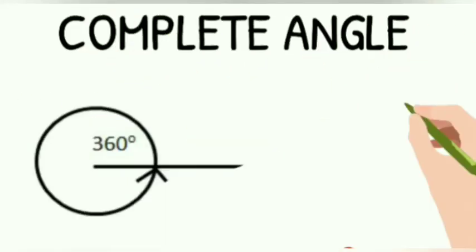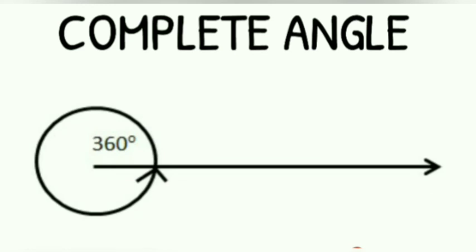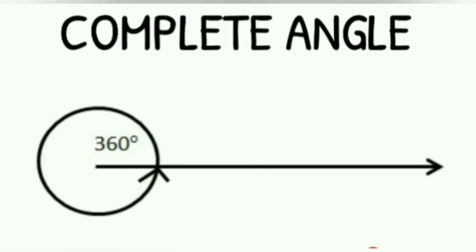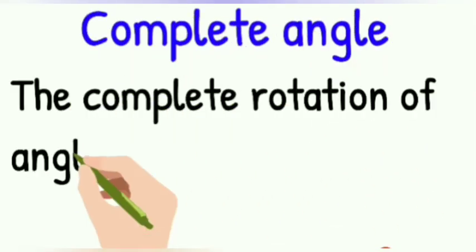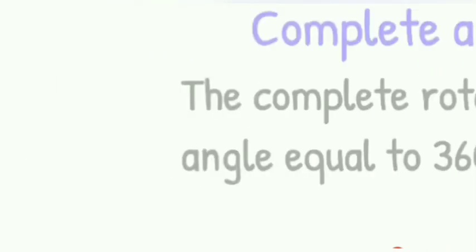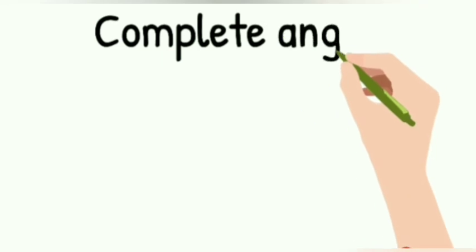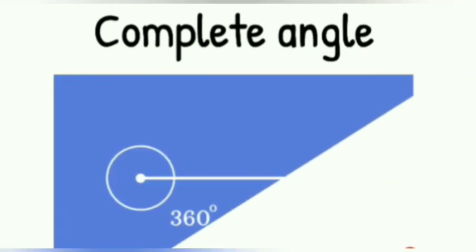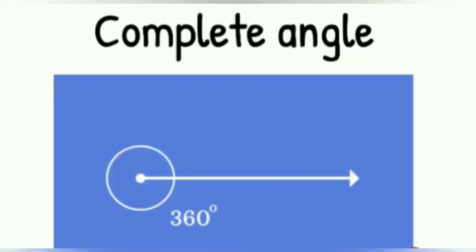Now let us learn about the last angle, which is complete angle. Complete angle is the complete rotation of an angle equal to 360 degrees. This is the example of complete angle. This complete angle is also known as zero angle.